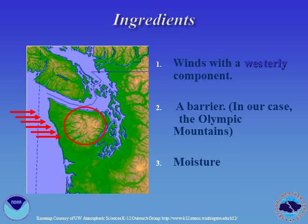Our barrier, in this case, is the Olympic Mountains on the coast of Washington. Finally, we need moisture in order for clouds and precipitation to form.